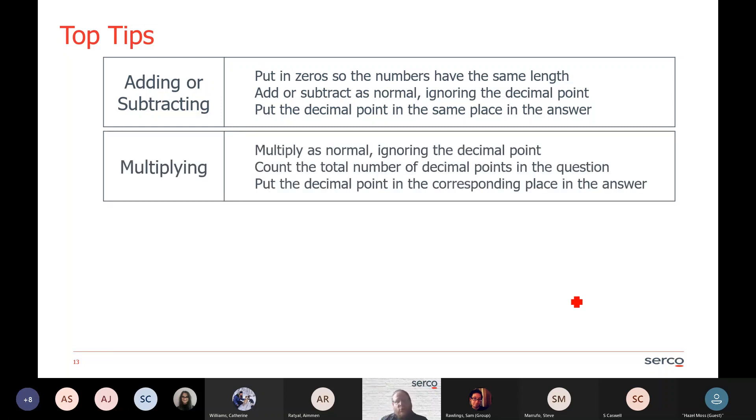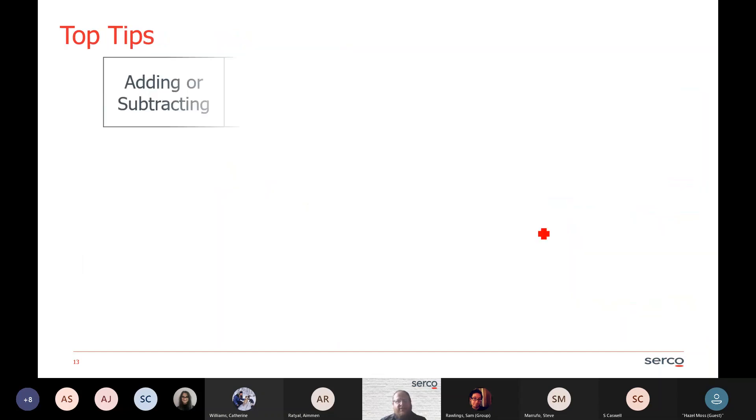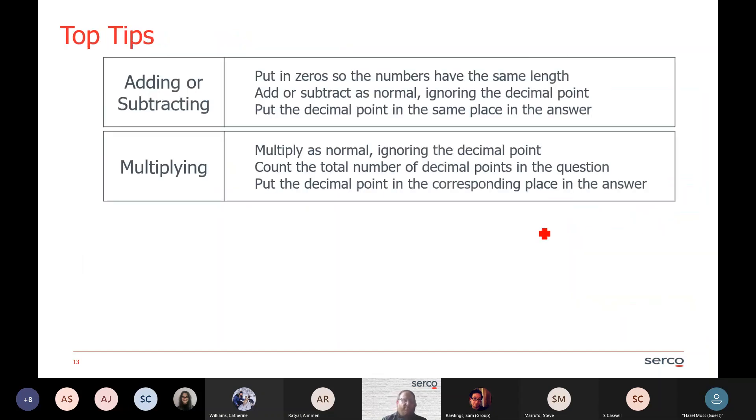If you're multiplying, what you do is multiply normally, but you take out the decimal point. Once you've got your answer, count the total number of decimal places that were in the question and put the decimal point in that corresponding place in the answer. So if you remember my question, I had three decimal places in it: 1, 1, and 4. So therefore, my answer had to include three decimal places.